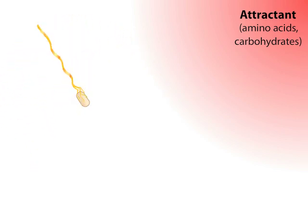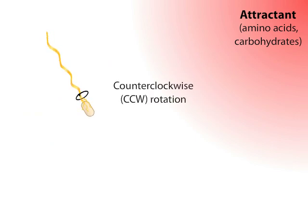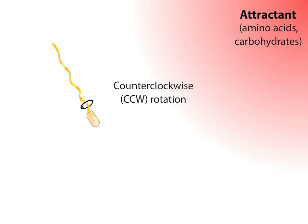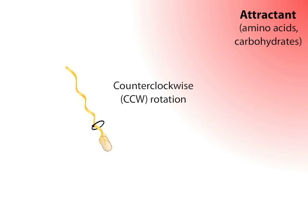The flagella rotor can rotate clockwise or counterclockwise. In the counterclockwise mode, all flagella sweep behind the cell, forming a rotating bundle that propels the organism straight ahead in what is called smooth swimming, or a run.